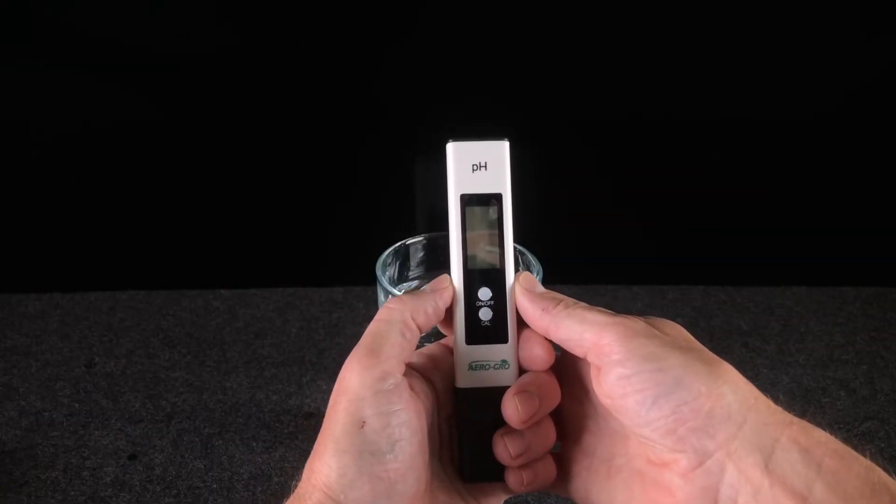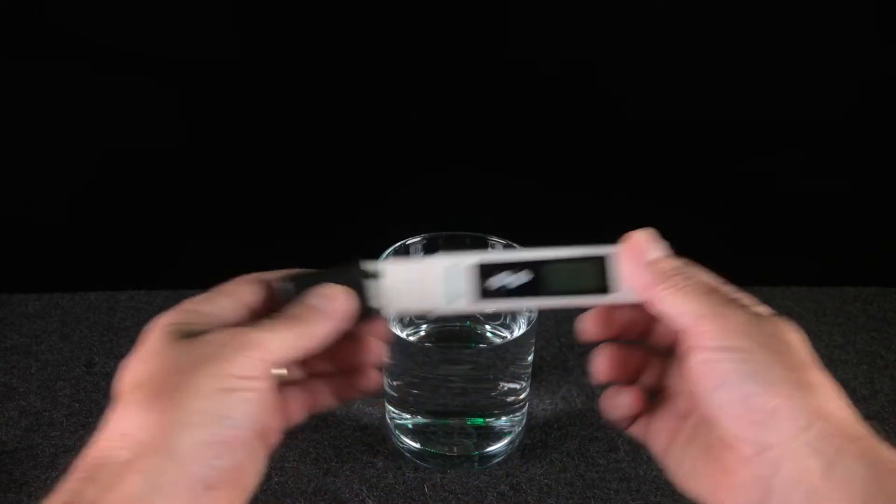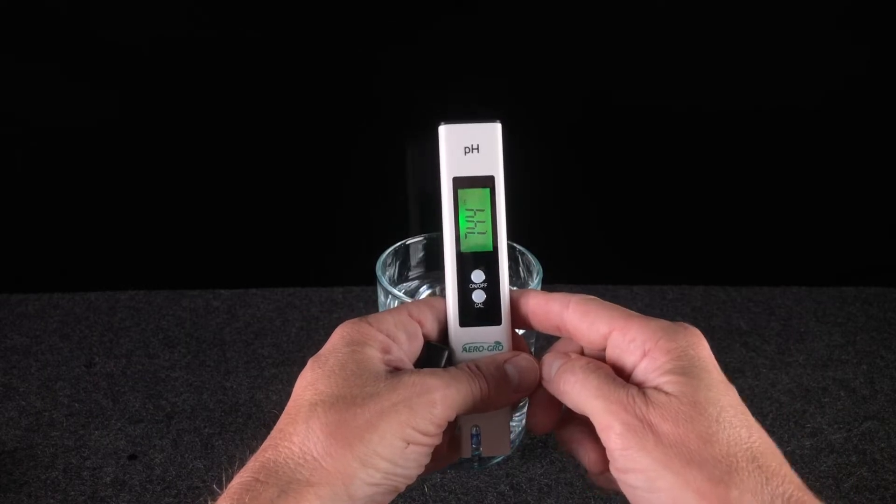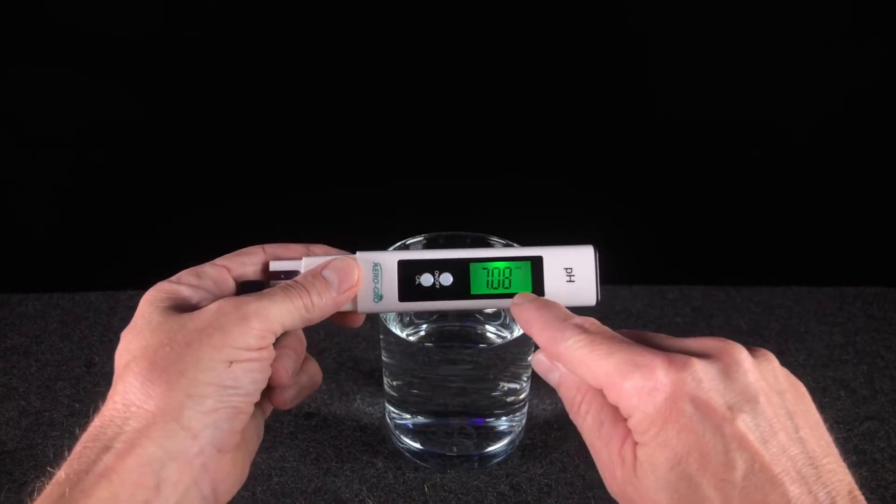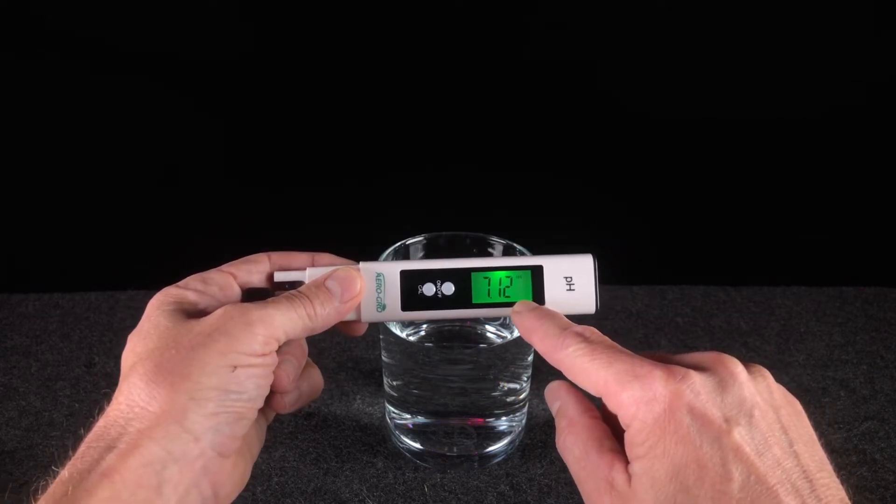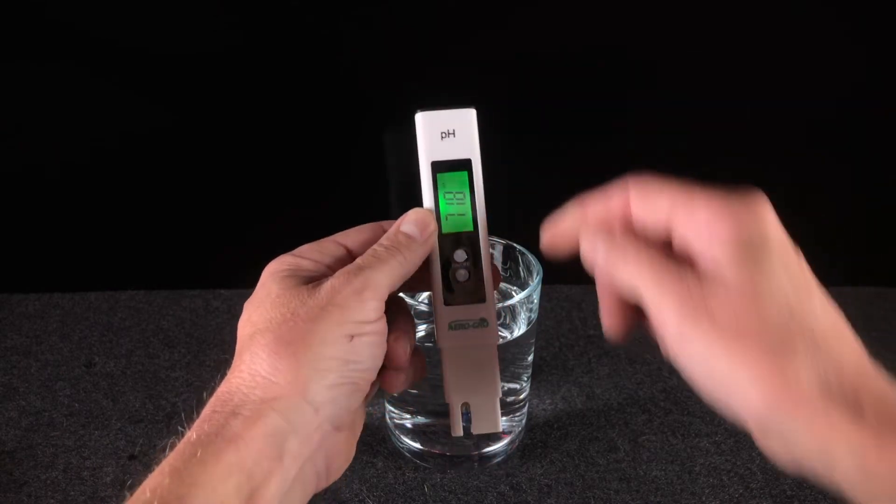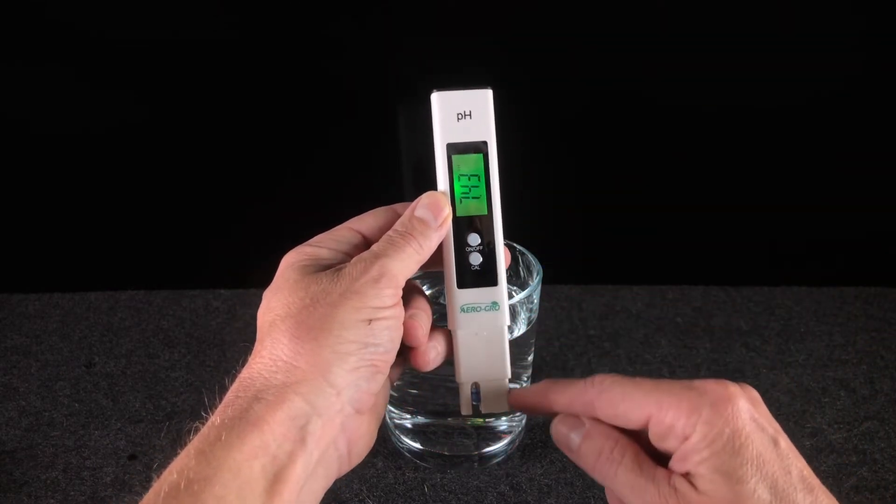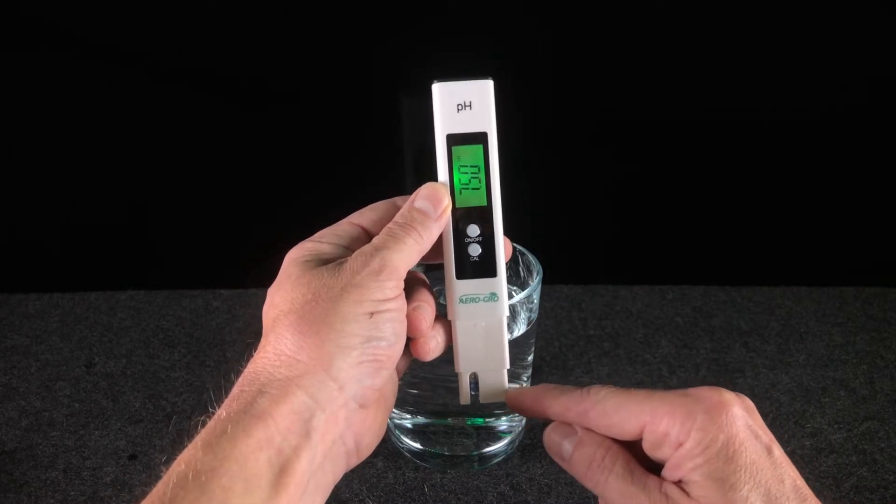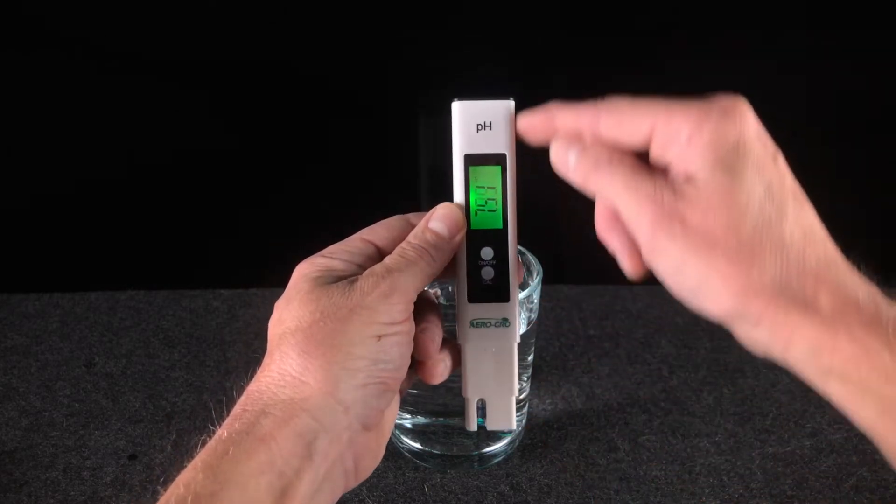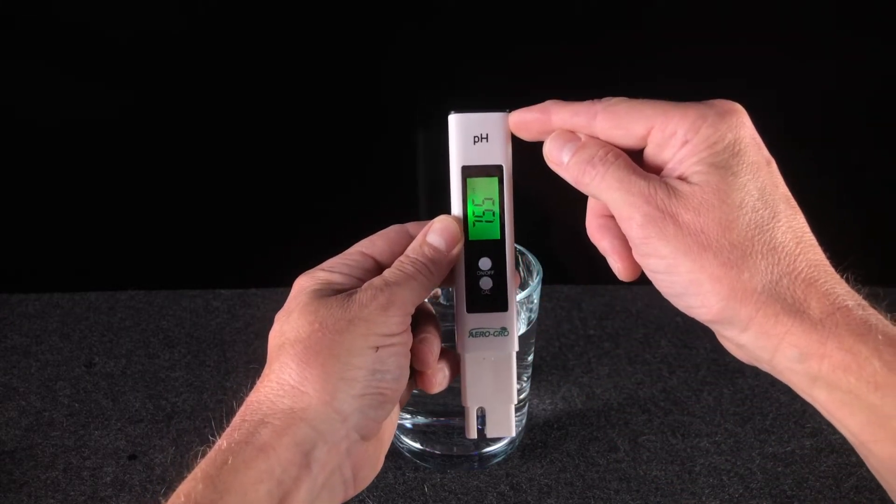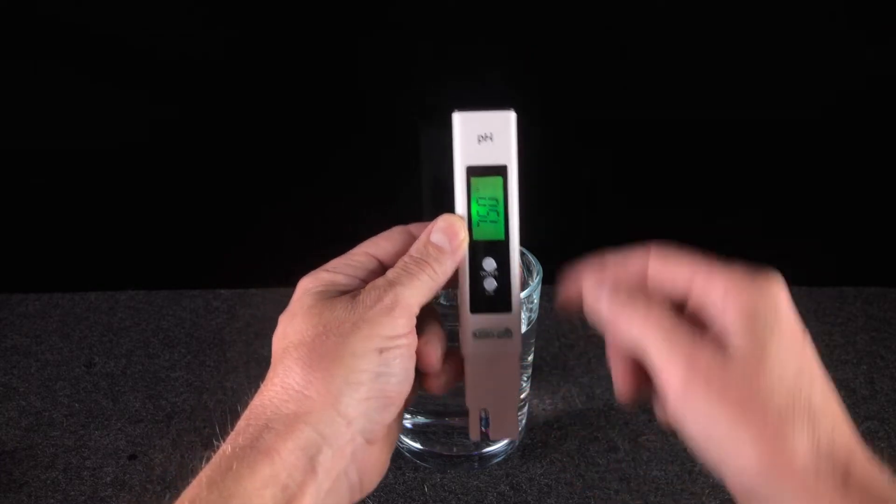To take a reading with your new pH meter, begin by removing the cap and then single-clicking the on-off button. Notice how there's a bit of drift to the numbers. This drifting is completely normal behavior for these types of meters. Also notice how the bottom portion of the meter, the part that's covered with the cap, is the portion that you'll be dipping into the solution. That's the waterproof portion of the meter. The top portion of the meter is not waterproof, so please do not dip that in the water, just the bottom portion that's covered by the cap.